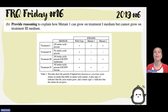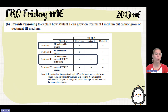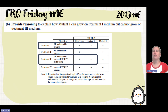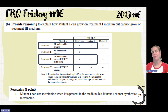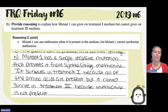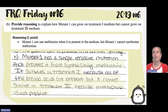Part B asks for reasoning: explain how mutant one can grow on treatment one but cannot grow on treatment three. Treatment one has all amino acids present and mutant one grows. Treatment three is missing methionine and mutant one did not survive. This means that when methionine is present, mutant one can use it, but it's not able to synthesize its own methionine. So mutant one can use methionine when it's present, but cannot synthesize methionine on its own. The student notes that mutant one has a single recessive mutation that prevents it from synthesizing methionine — it survives in treatment one because all amino acids are present, but cannot survive in treatment three because methionine is absent.